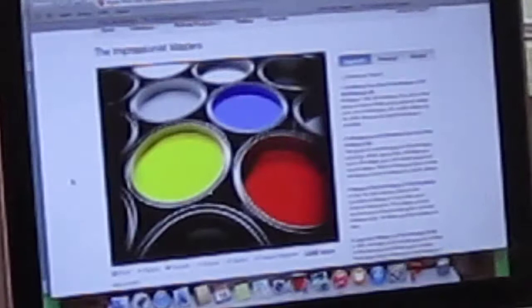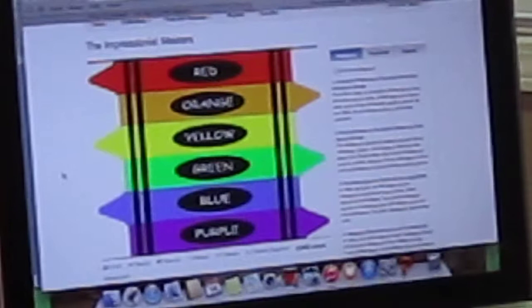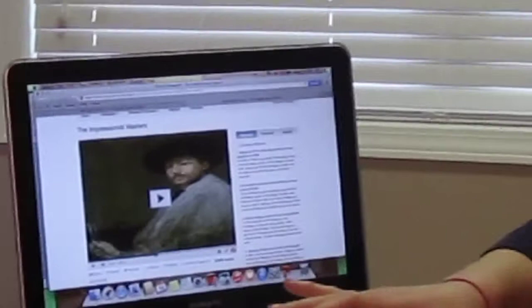Gray tones are created by mixing any color with its complement, which is its opposite color on the color wheel. These are red-green, yellow-purple, and blue-orange. Add white to any of these combinations and the result is a variety of shades of gray.